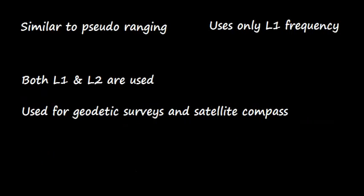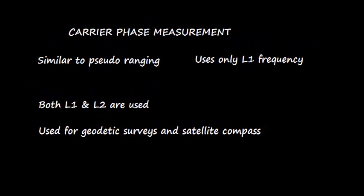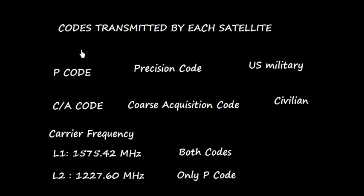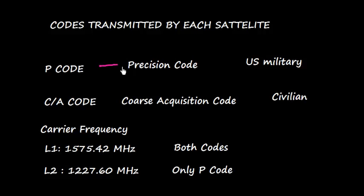There is something called carrier phase measurement, which is quite similar to pseudo-ranging and uses only L1 frequency. But there is another one when we use both L1 and L2, and that is used for geodetic surveys and satellite compass. The codes transmitted by each satellite are called P-code or CA-code. P-code means precision code and is used by the U.S. military. CA-code means Coarse Acquisition Code, which contains some error and is for civilian purposes.